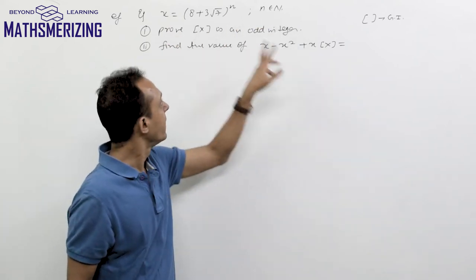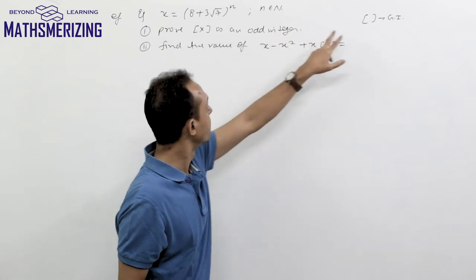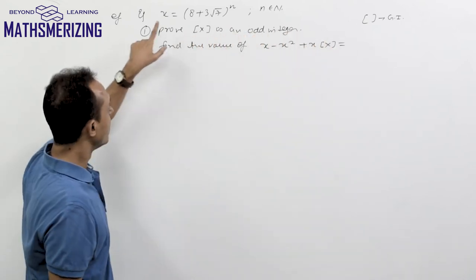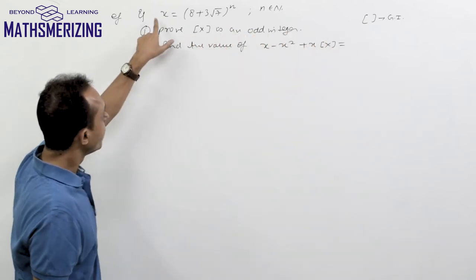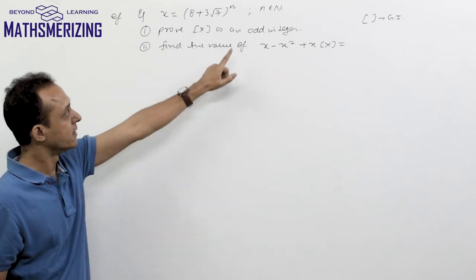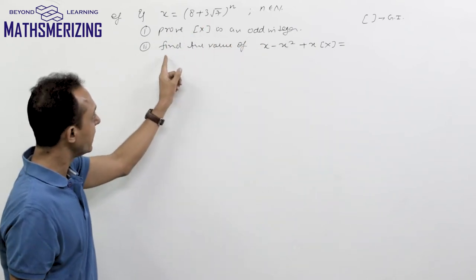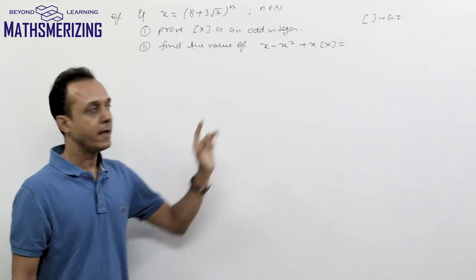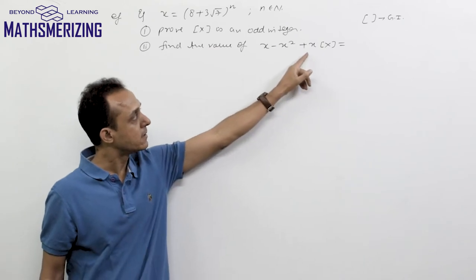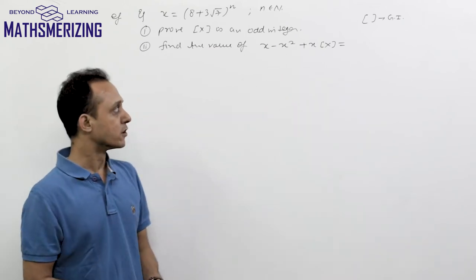The box brackets represent the greatest integer function. The problem asks us to prove that the integer part of this binomial expression is an odd integer, and also to find the value of x minus x-squared plus x into the greatest integer function of x.